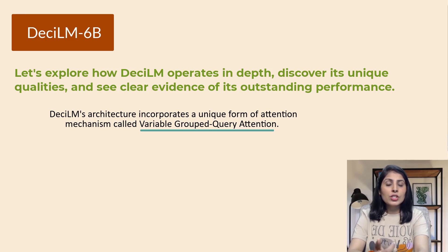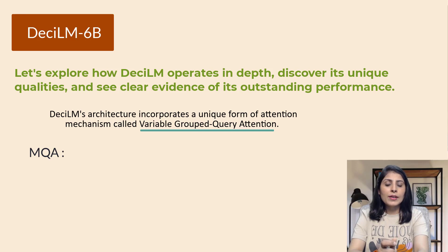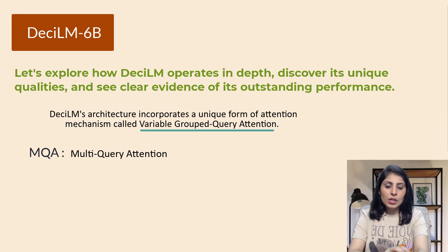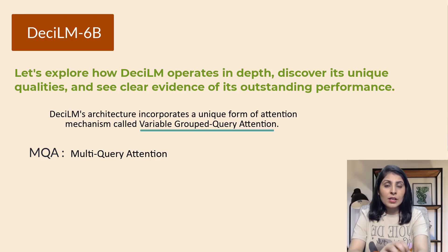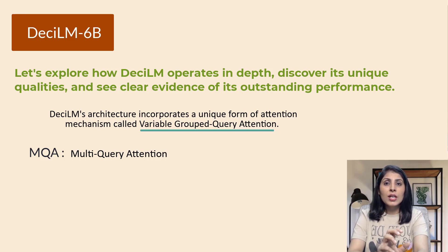This is also called Grouped Query Attention, or GQA. GQA was introduced to improve on MQA, which stands for Multi-Query Attention. MQA reduced the number of parameters in the attention mechanism by having multiple query heads but sharing the same keys and values across all heads. This improves computational and memory efficiency but results in a loss of model quality.